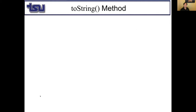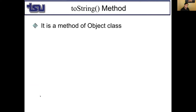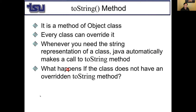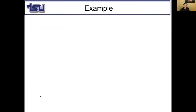The toString method is what we're going to discuss now. We already discussed it briefly, but we're going to have a more formal introduction. toString is a method of Object class. Every class can override it. Whenever you need the string representation of an object, Java automatically makes a call to toString. If the class does not have an overridden toString, Java calls the default implementation.